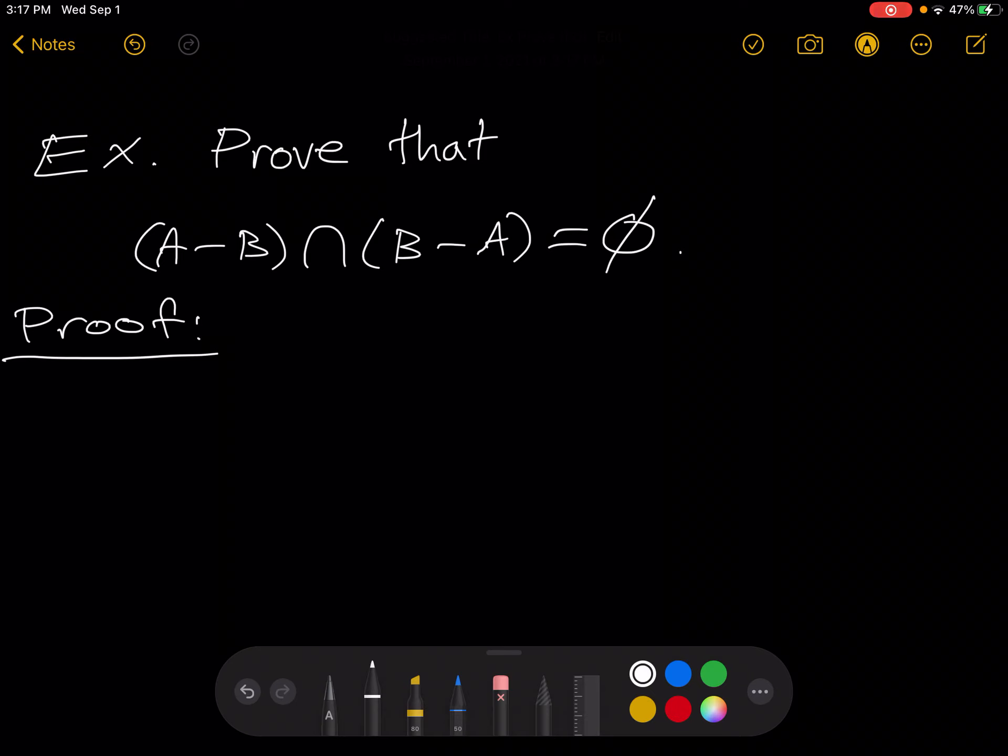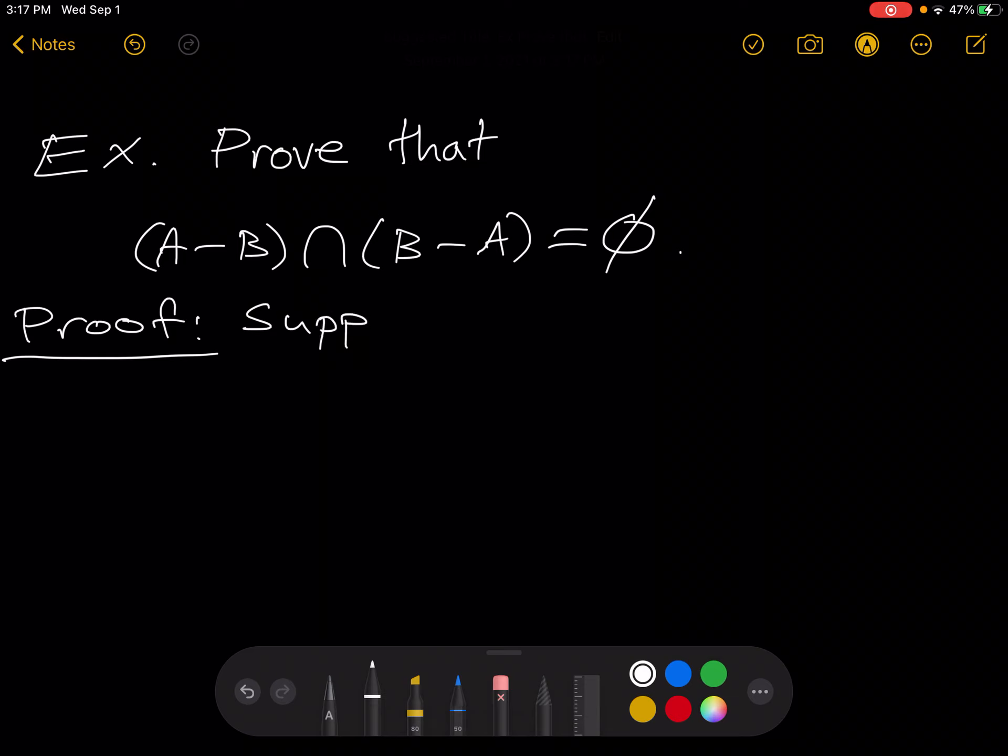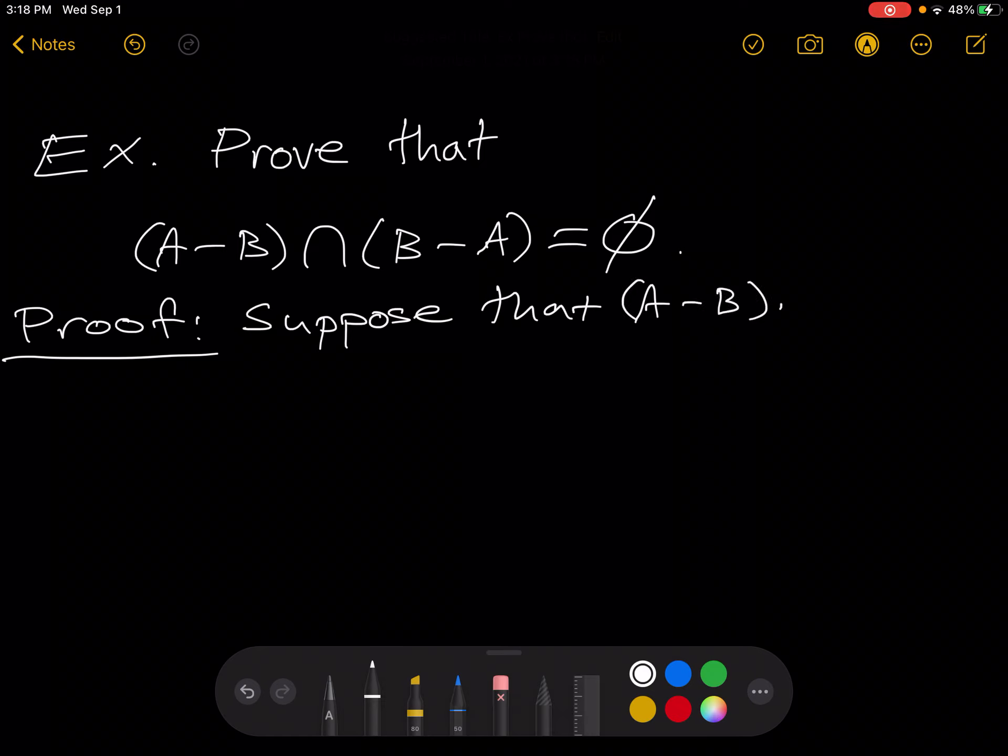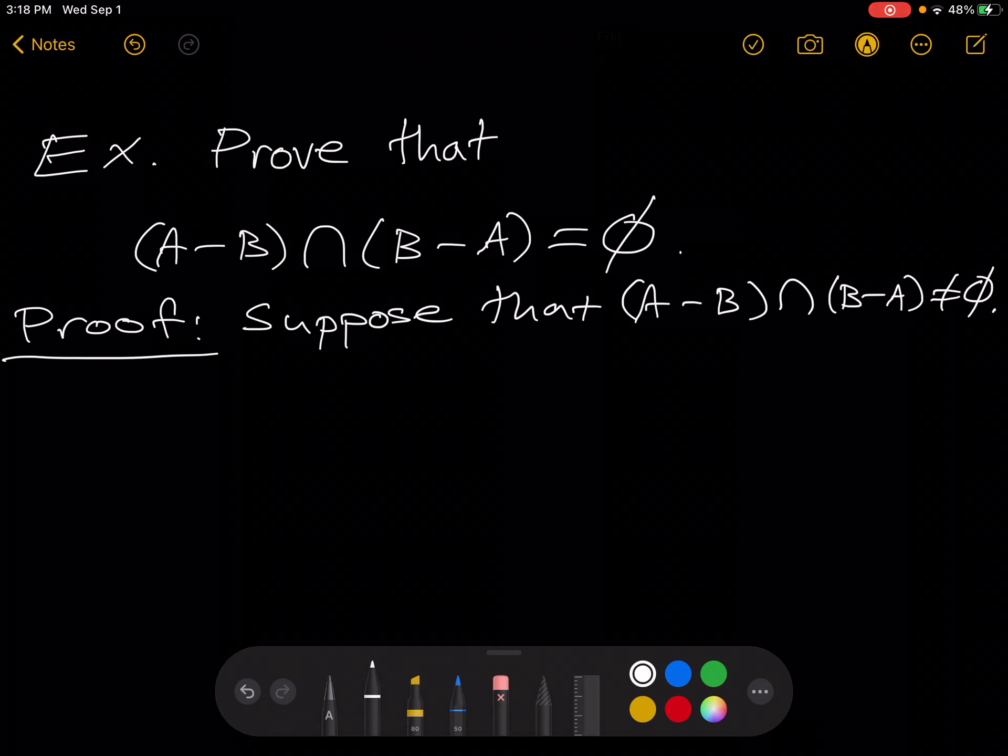So we're going to suppose that A minus B intersected with B minus A is not empty. It's not empty. So what does that mean if this is not empty? That means there's something in it.